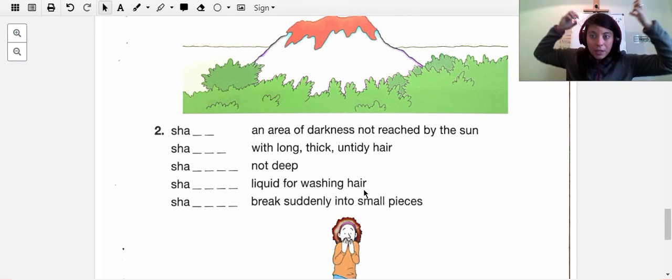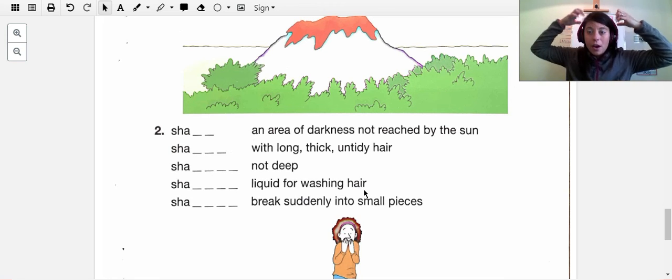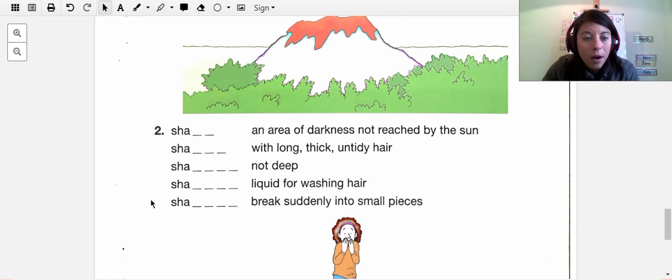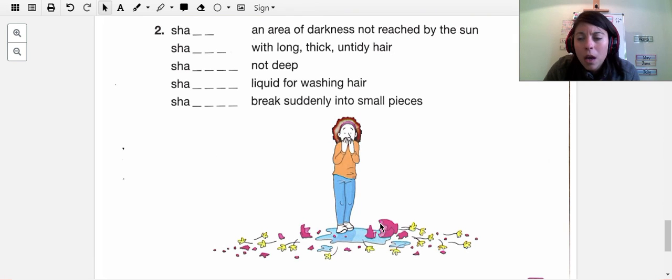Liquid for washing hair. You know, when you take a shower, you put this stuff on your hair to wash your hair. Or at least you should. S-H-A and a bunch of four letters. And break suddenly into small pieces. Like this girl, she dropped a flower vase and it, blah, something happened here.